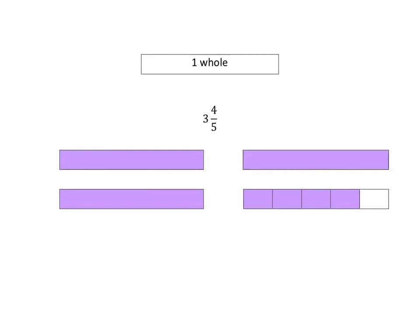So here is a picture of 3 and 4/5: one, two, three wholes and then 4/5 of another whole. How can we then write this as an improper fraction? Well what we need to do is have everything in terms of fifths. So let's cut up all our fizz bars into fifths.